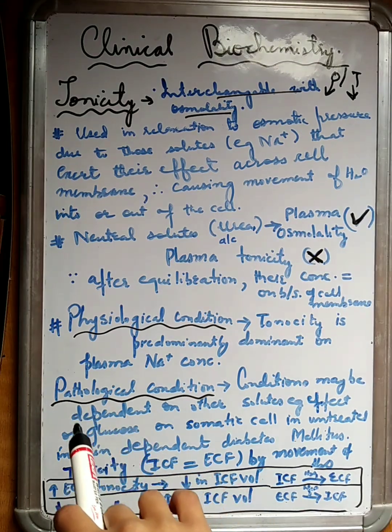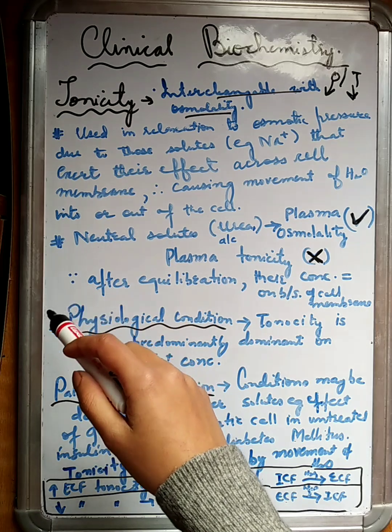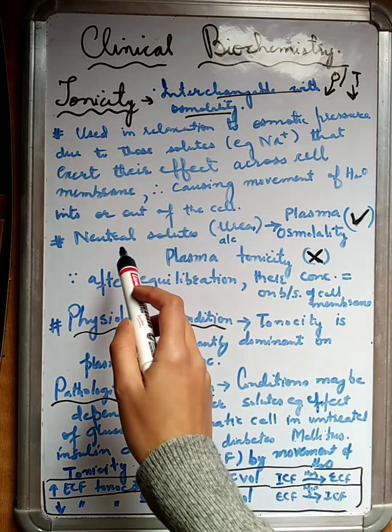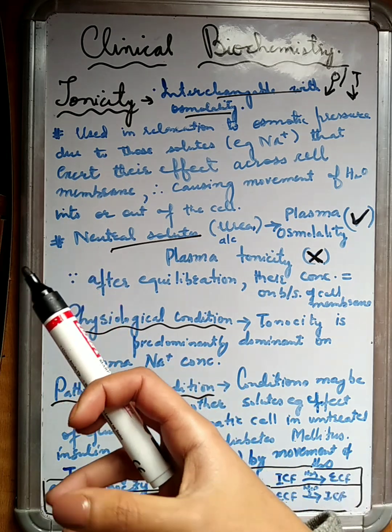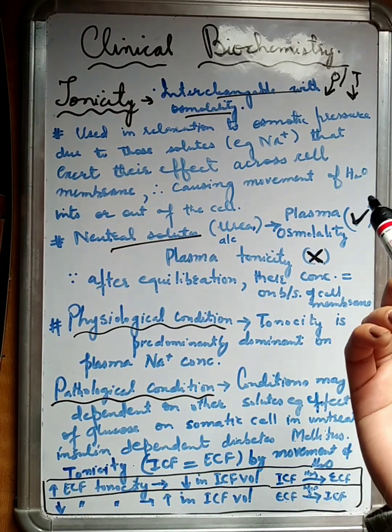Like we said in the previous video, we gave you some examples of neutral solutes. Neutral solutes are those solutes that are not responsible for the movement, that actually don't drag the water from one compartment to the other compartment.